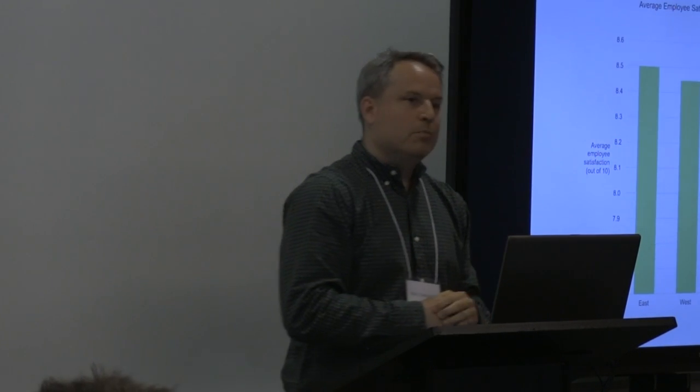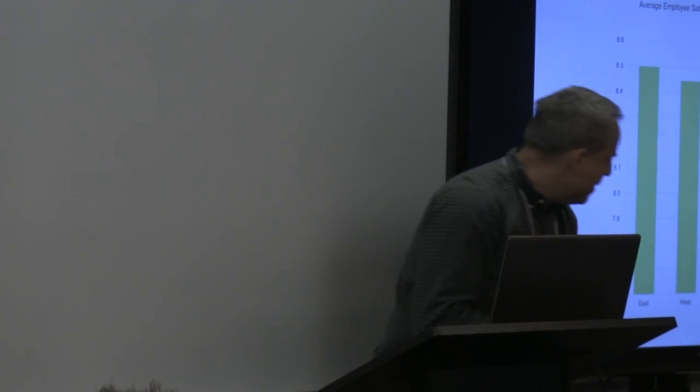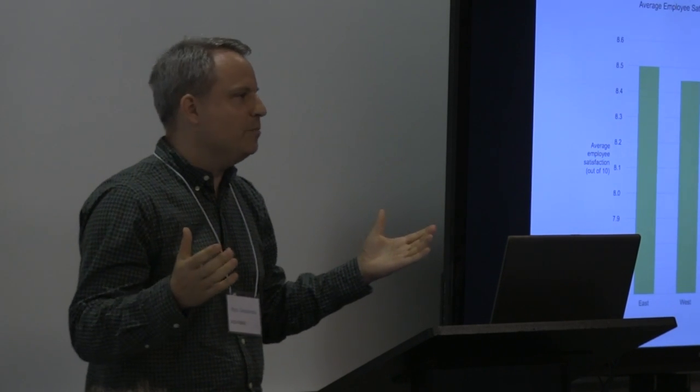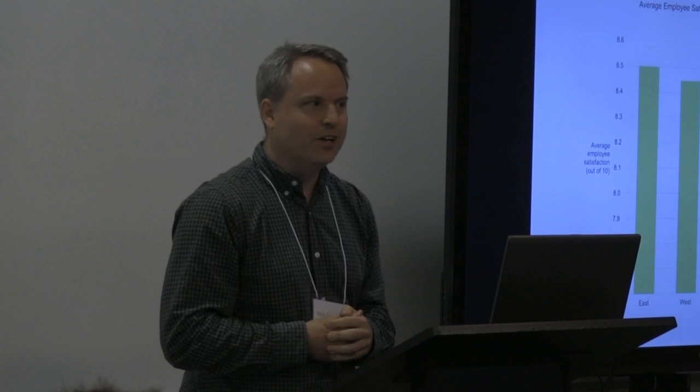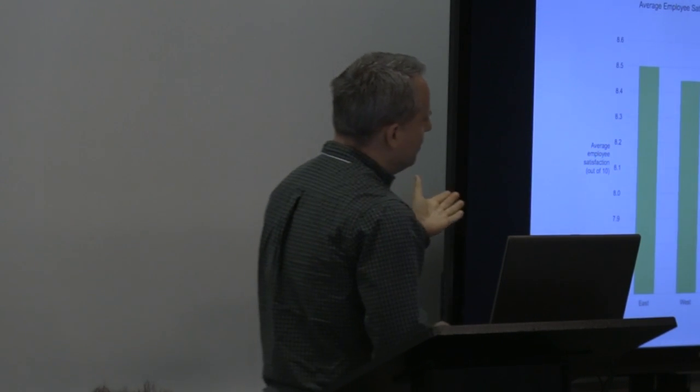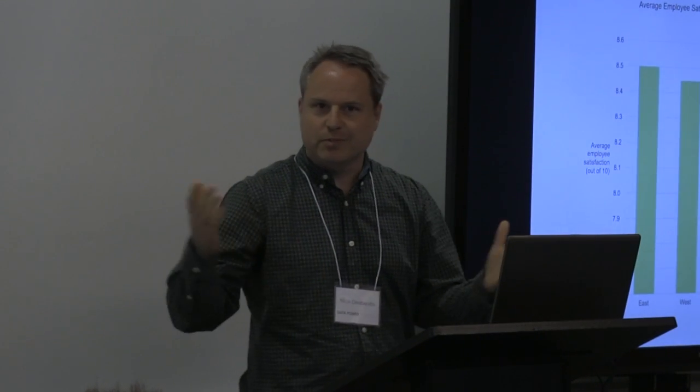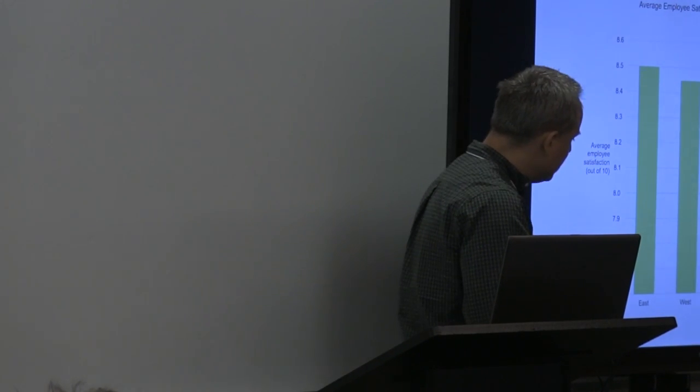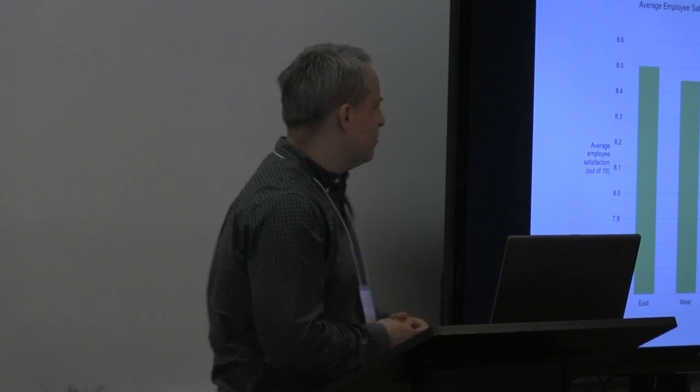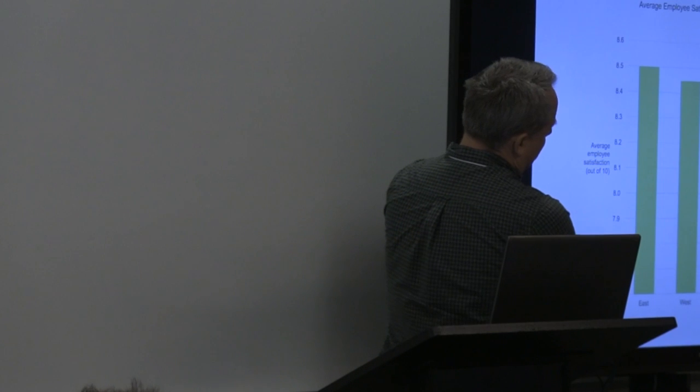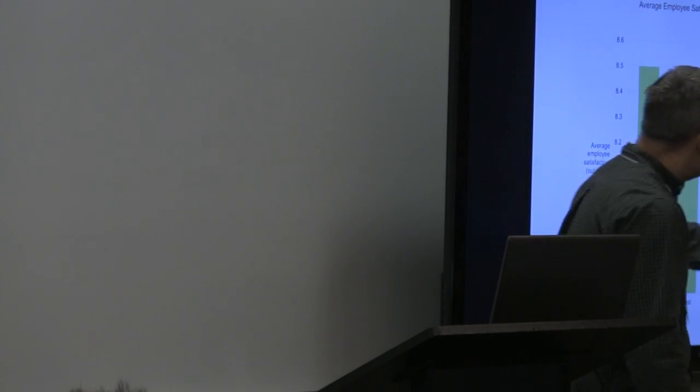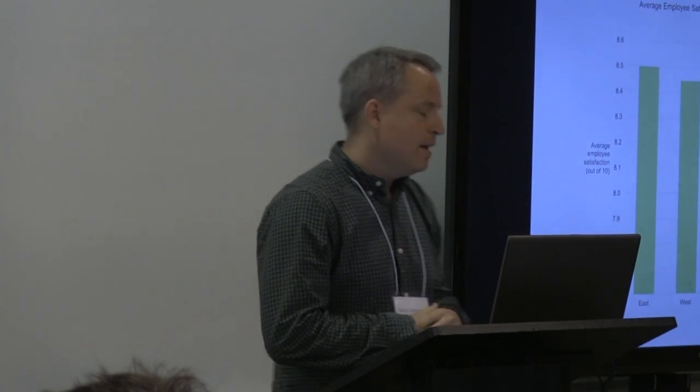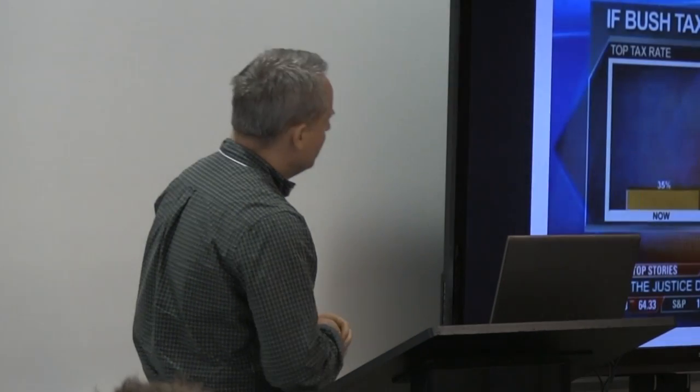So why don't I make it easier to see the differences and only show the part of the scale that goes from about seven and a half to eight and a half? Much easier to see the differences. Looks more exciting. But then you get this furious phone call from the manager of the central office saying, 'The CEO said that the employee satisfaction of my regional office was less than half of the others.' Of course, it's very easy to not notice that this doesn't start at zero.